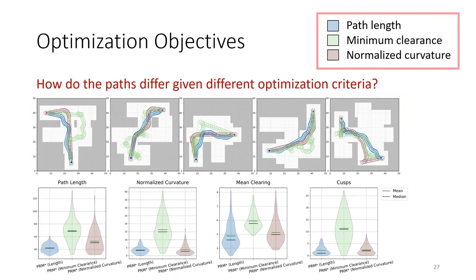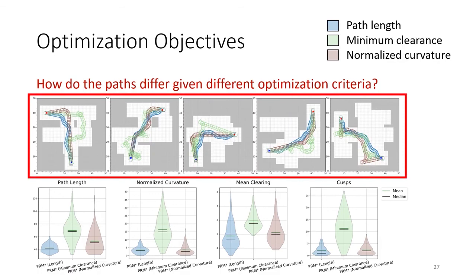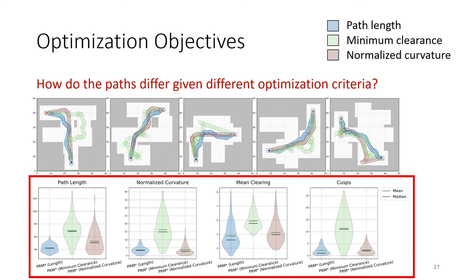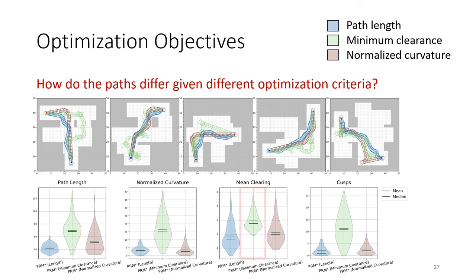These solutions have been found by PRM-STAR and evaluated on five different procedurally generated corridor environments. In the bottom row, we report the statistical results from PRM-STAR using these three different objectives. The figure indicates that maximizing the minimum clearing distance indeed increases the clearance compared to minimizing the path length or normalized curvature but also increases the number of cusps substantially. Minimizing the normalized curvature decreases the curvature slightly compared to minimizing the path length.